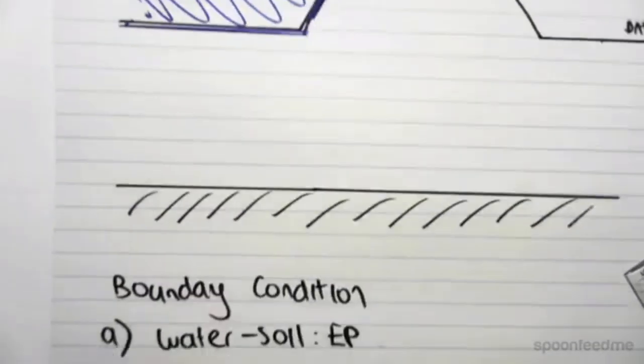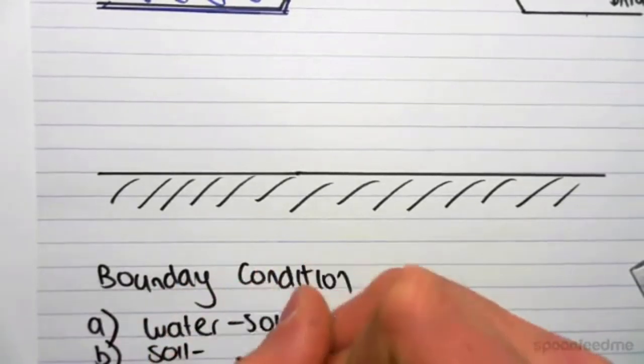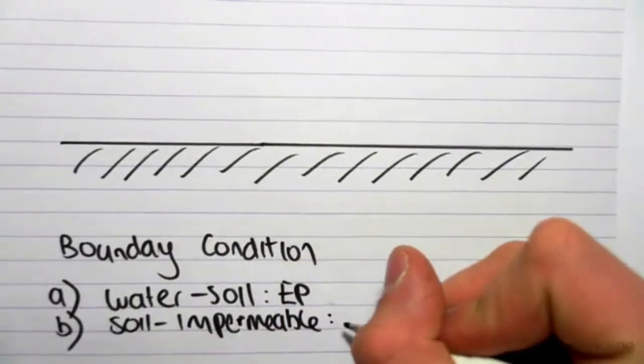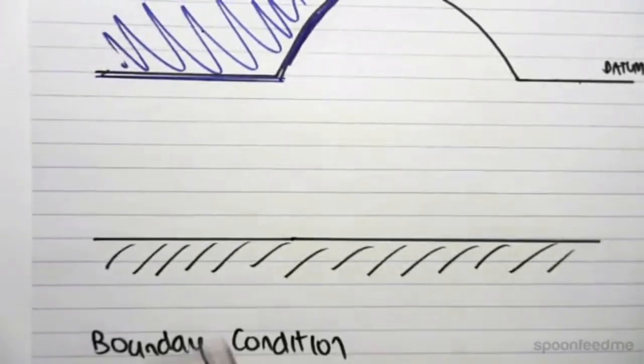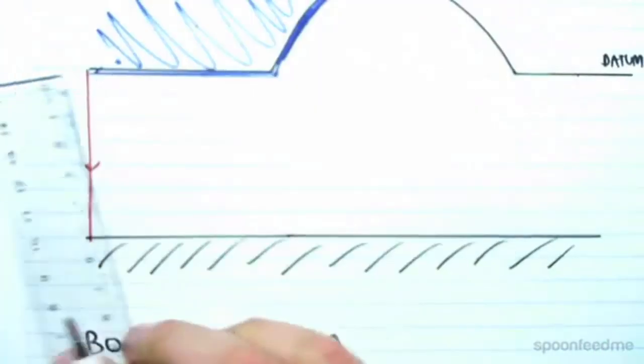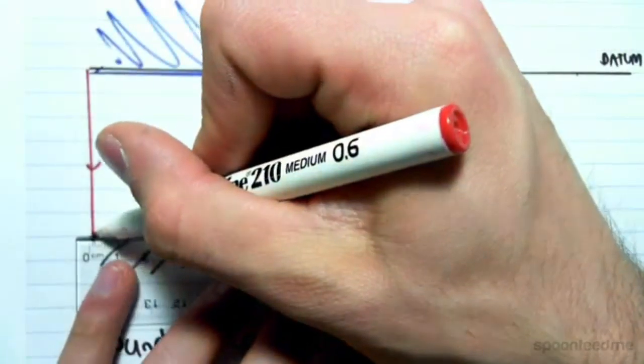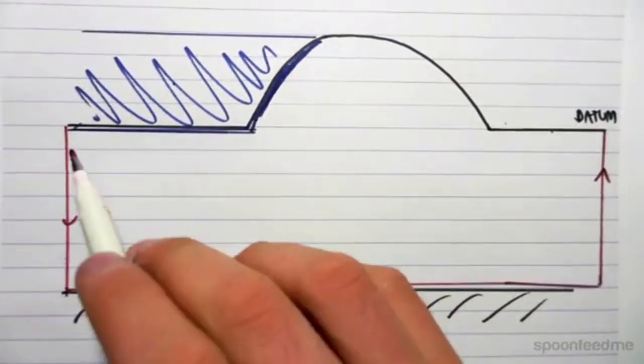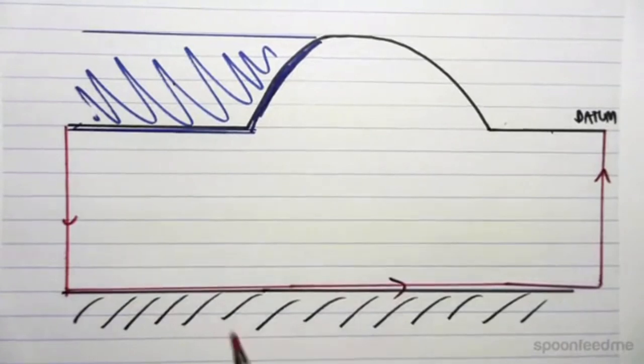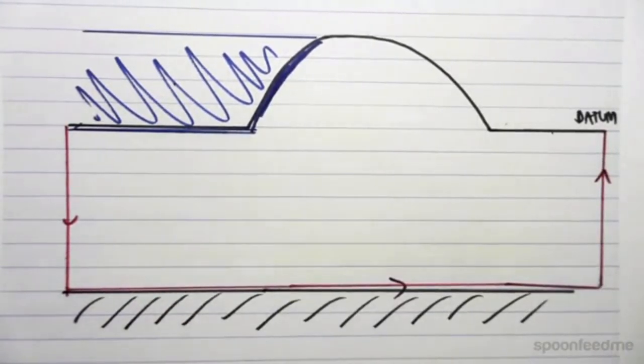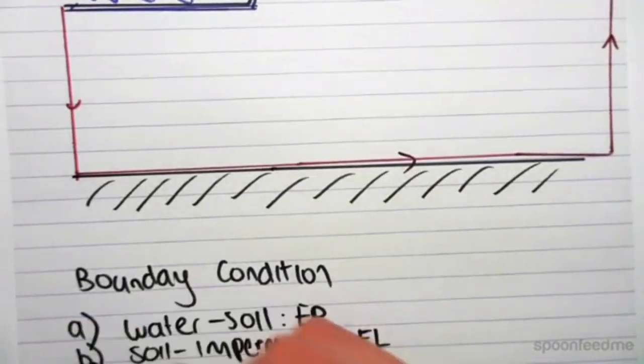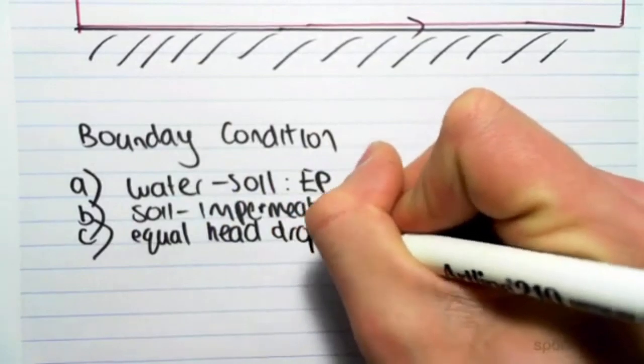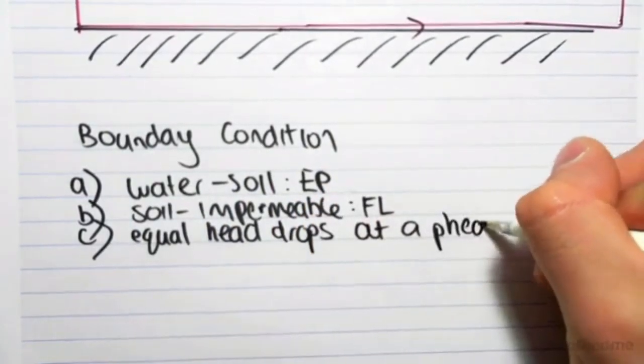The second boundary condition is at a soil and impermeable boundary. At a soil and impermeable boundary, we have a flow line. So for example, our flow is going to come from this water down here, and it's going to come across this boundary and back up. This might seem a bit weird that the flow is going down and then up, but we just have to remember what causes flow is a change in head. So it's going to go from there to there.